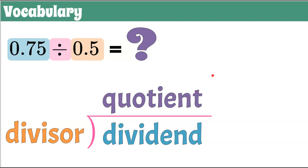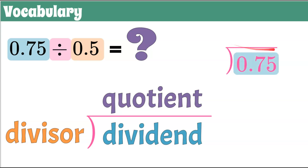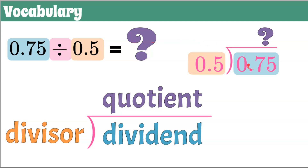So let's set this up using the numbers. 0.75 is being divided by the divisor 0.5, which will give us our quotient. You start inside — 0.75 is being divided by the divisor 0.5.